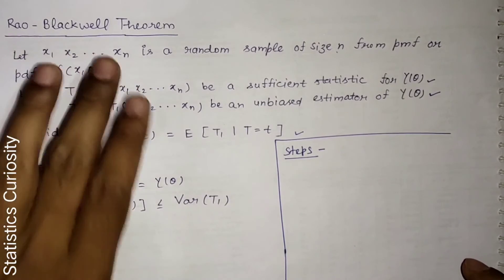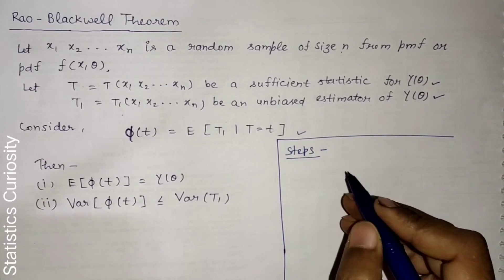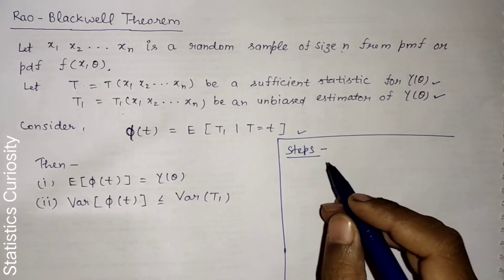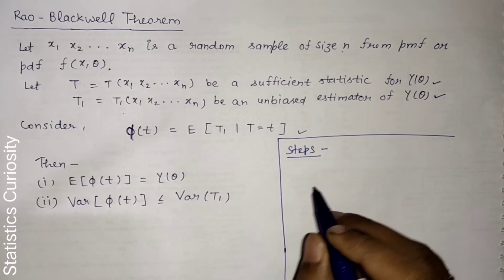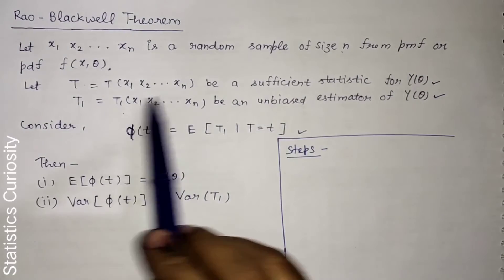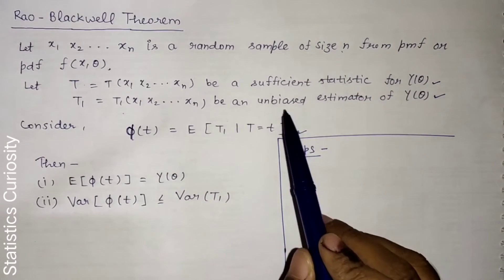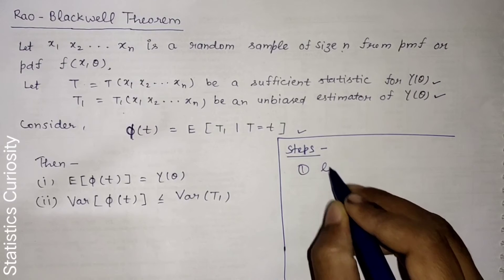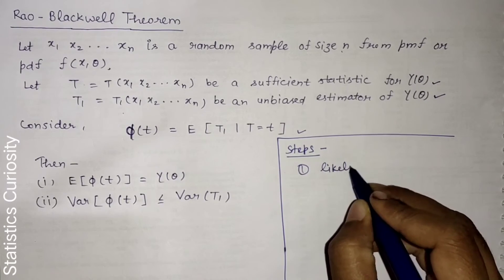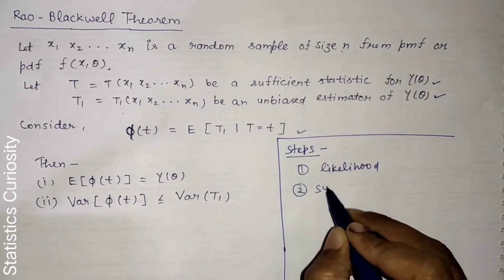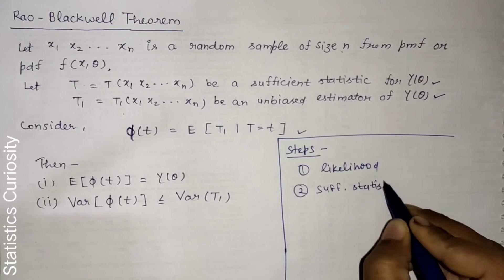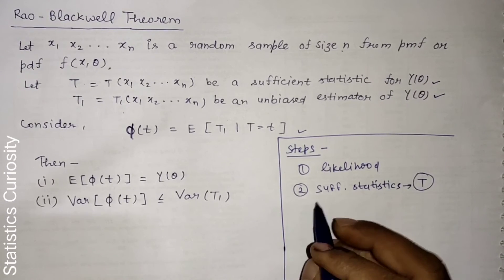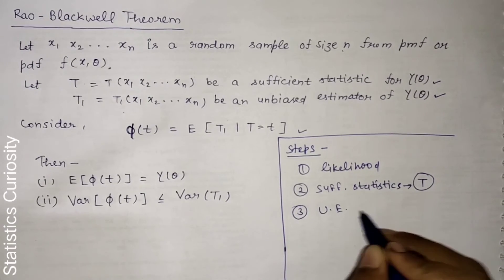Here are the steps to apply the Rao-Blackwell theorem in a numerical problem — for example, to find a minimum variance unbiased estimator for a Poisson or exponential distribution. First, write the PDF then the likelihood. Second, find the sufficient statistic T using the Neyman factorization theorem. Third, find an unbiased estimator T1.